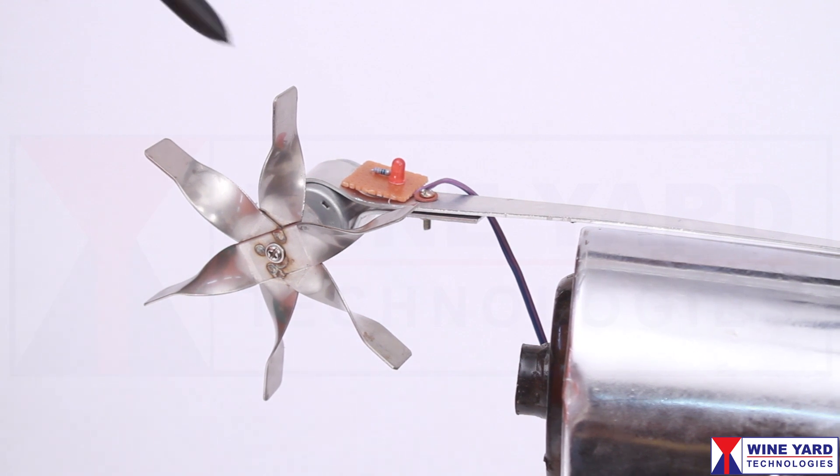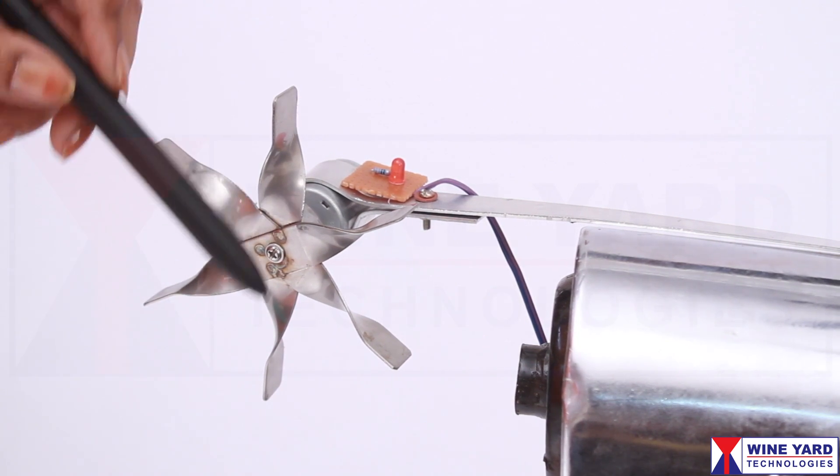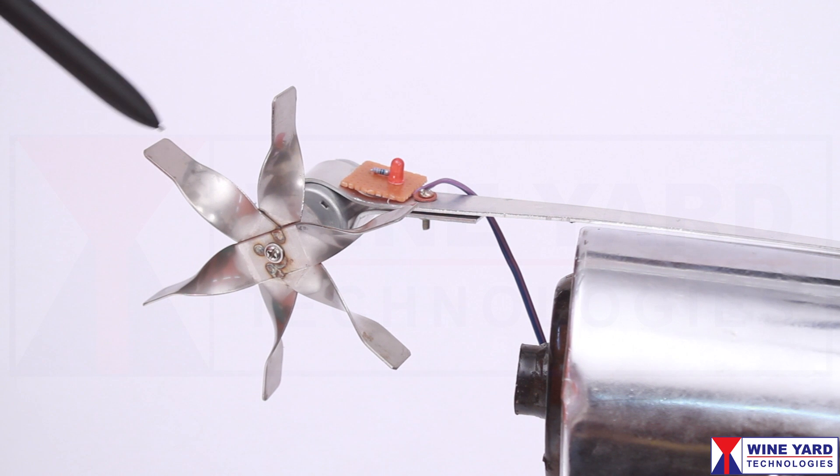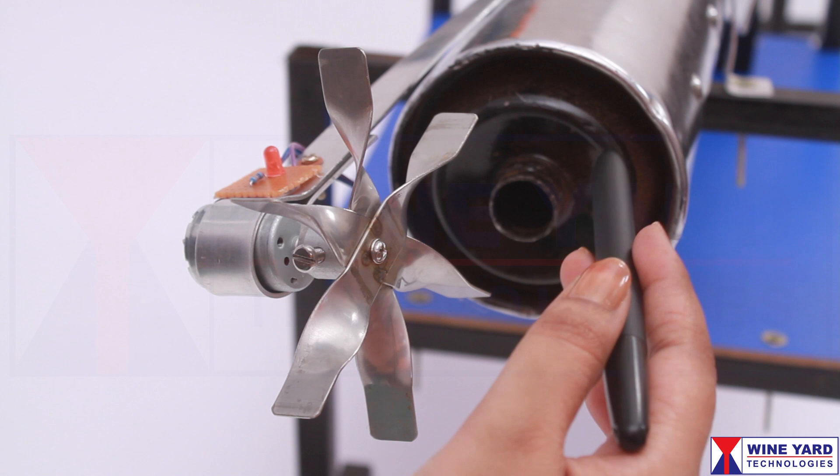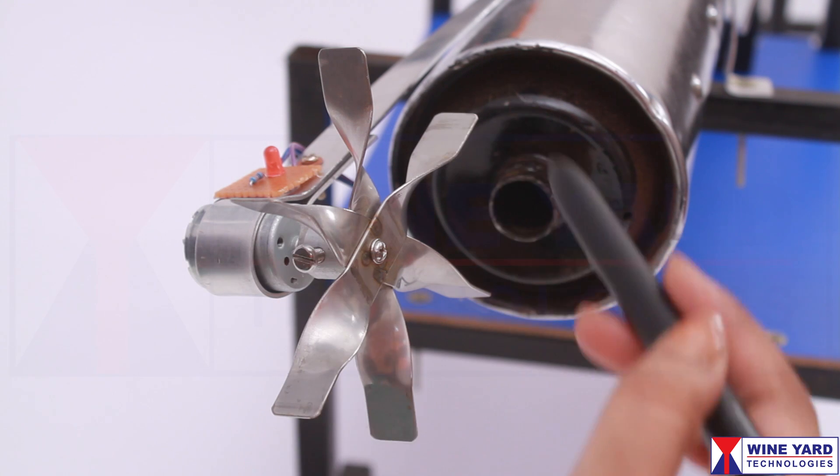This is a simple DC generator fitted with a propeller blade arrangement. The propeller blades are made with mild steel. The high-pressure exhaust gas from the silencer causes the generator to rotate.